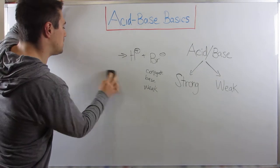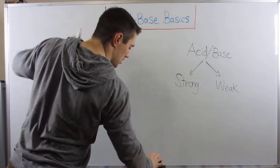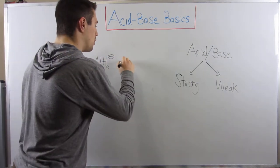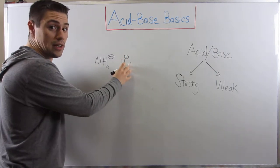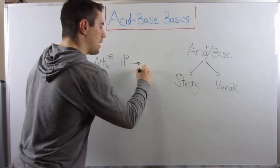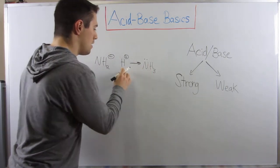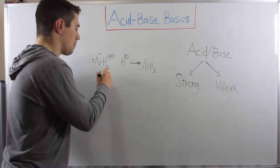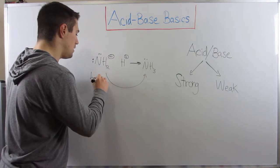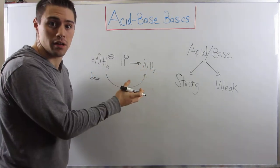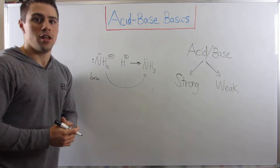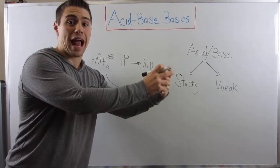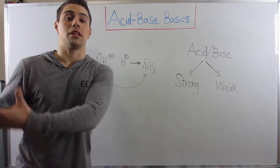Let's quickly look at a base example. NH2- is a strong base. If we were to protonate it, or give it H+, then we would have NH3, because we'd just be adding H+. So if NH2- is a strong base, then we know that the conjugate acid NH3, ammonia, is a weak conjugate acid. If you come from something that's strong — a strong acid or base — your conjugate acid or base will be weak. And if you're looking at something that's weak, it must have come from something that's strong.